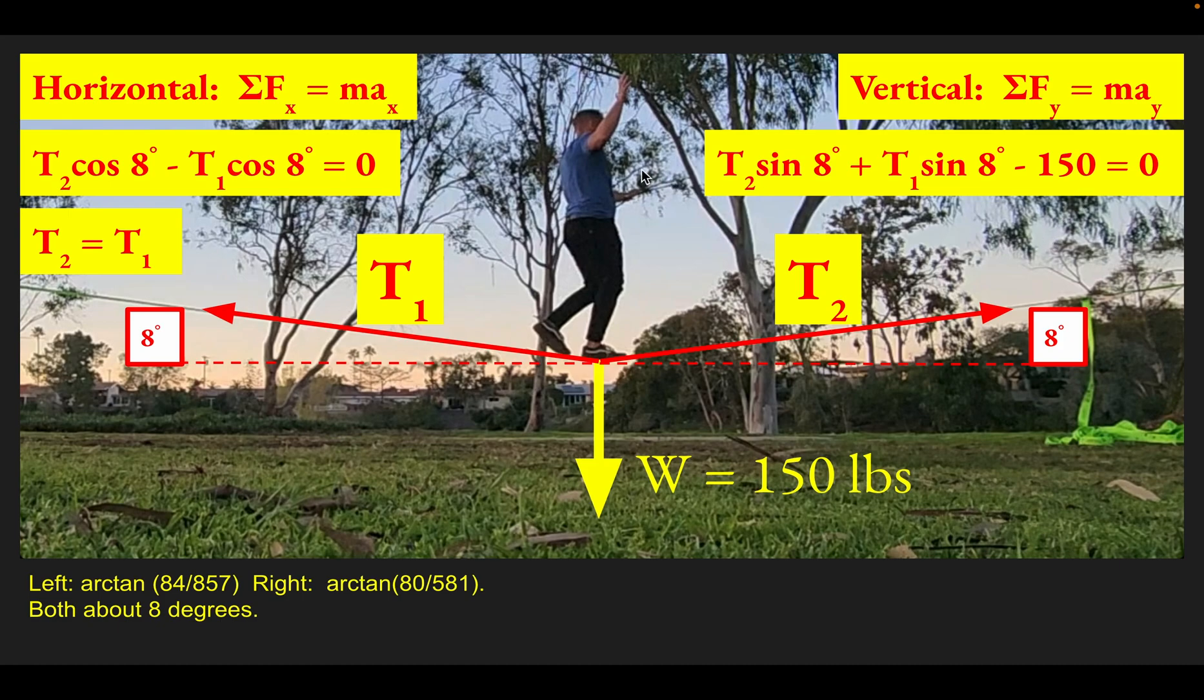Thankfully, we know T1 and T2 are the same value already, so we can make a substitution. You get two times T2 sin 8 equals 150, because you could put T1 in for T2 in this first term. So T2 sin 8 plus T2 sin 8 equals 150 pounds.